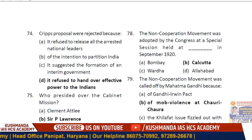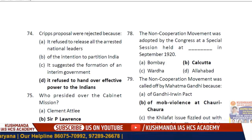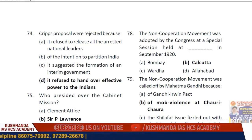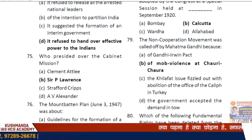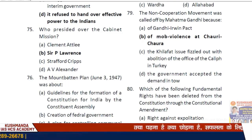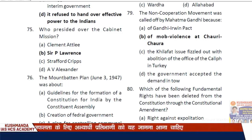Question 78: The Non-Cooperation Movement was adopted by Congress at a special session. Question 79: The Non-Cooperation Movement was called off by Mahatma Gandhi because of the mob violence at Chauri Chaura, where some police personnel were killed.